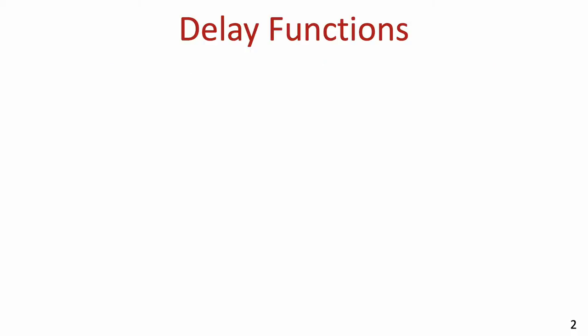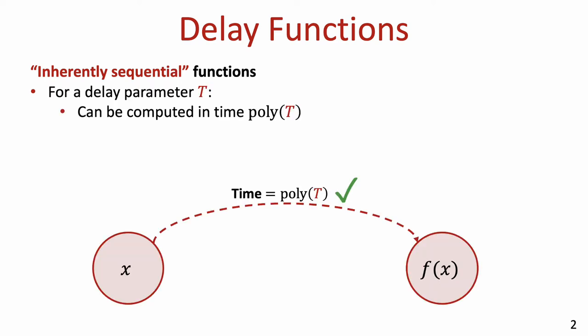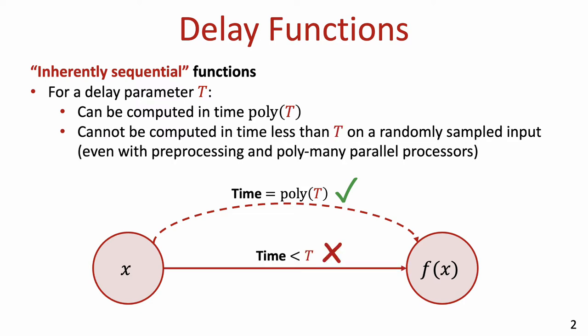Let's start by defining delay functions and then talk about verifiability. Roughly speaking, a delay function is a function which is efficiently computable, but only in a manner which is inherently sequential. One way to capture this is by introducing a delay parameter t. The function should be computable on every input in some time polynomial in t, for example 4t or t squared, but it should not be possible to evaluate the function on a randomly chosen input in time less than t, even with preprocessing and many parallel processors.